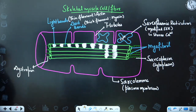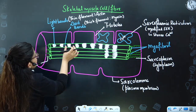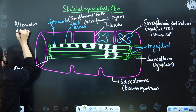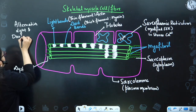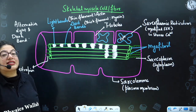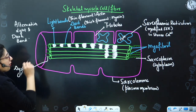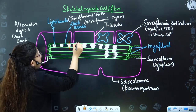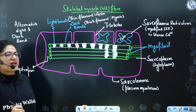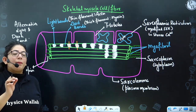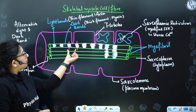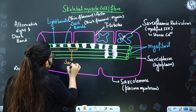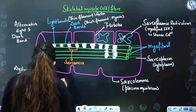Due to the alternating arrangement of light and dark bands, a structure known as the sarcomere is formed. Proteins are present in a linear manner that bisect the light band, forming the sarcomere. Sarcomere will only be present where alternating light and dark bands are present. Let's see what a sarcomere is in detail.